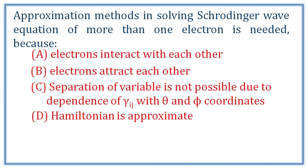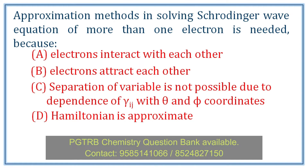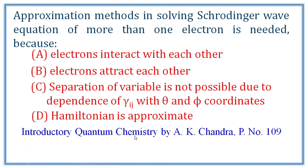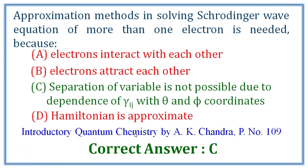Approximation methods in solving the Schrödinger wave equation for more than one electron are needed. When more than one electron is present in polar coordinates, separation of variables is not possible due to the dependence of r_ij with theta and phi coordinates. The correct answer is C.